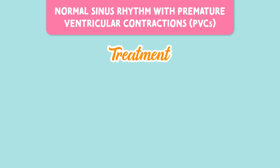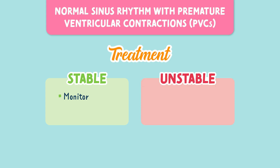Treatment really depends on the patient's symptoms. If the patient is stable, we usually just monitor. But if the patient is unstable — meaning they feel palpitations or are lightheaded — we want to treat the underlying cause. The PVCs themselves often don't need treatment unless they're frequent or causing issues; in those cases, beta blockers are considered.